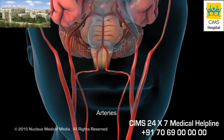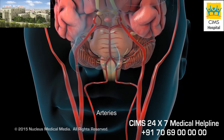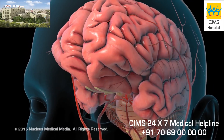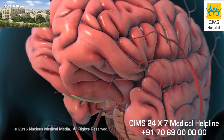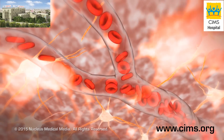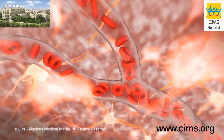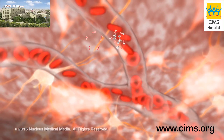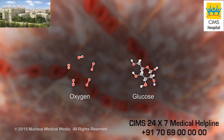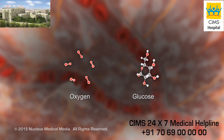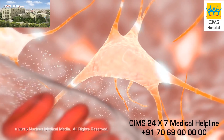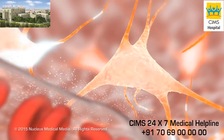Normally, the brain receives blood via two major pairs of arteries, which branch throughout brain tissue and supply your brain cells with a constant flow of oxygen, glucose, and nutrients necessary for their functions.